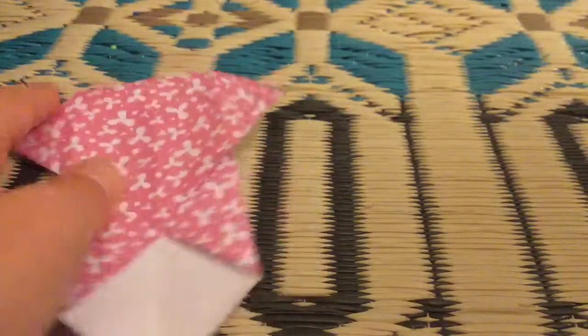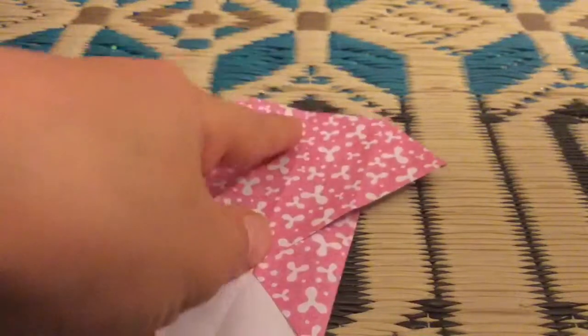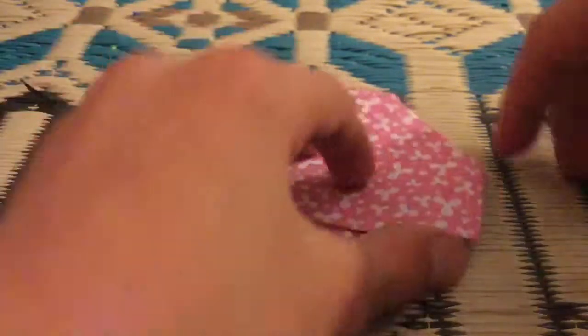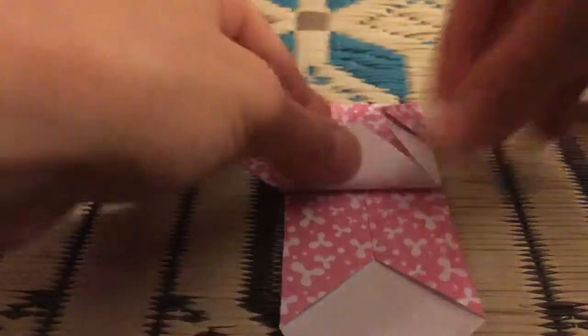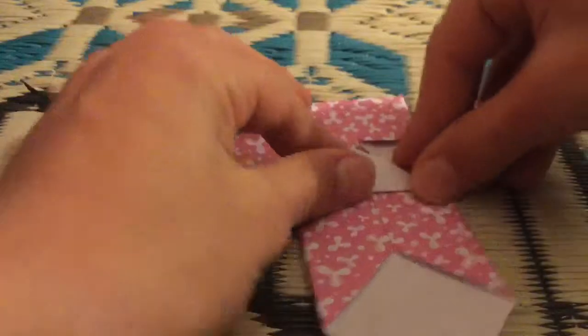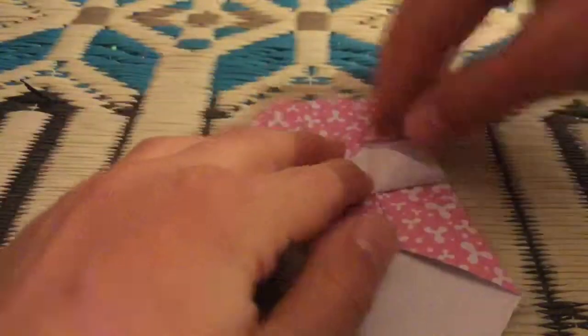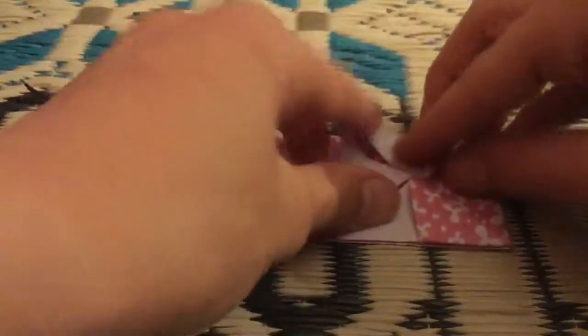Now you should have a square with one corner folded in. And you fold this back, this back, and of course, this back.